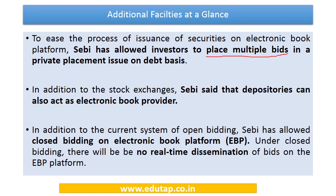In addition to stock exchanges, depositories can now also act as Electronic Book Providers. The previous circular's definition was narrow and only covered recognized stock exchanges. The new circular broadens this definition so that both stock exchanges and recognized depositories can act as EBPs.